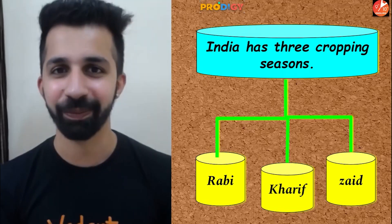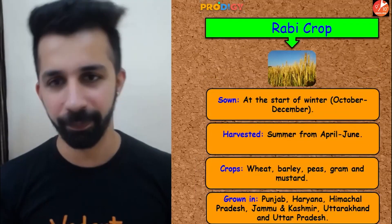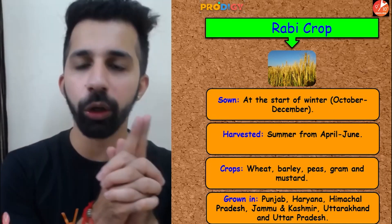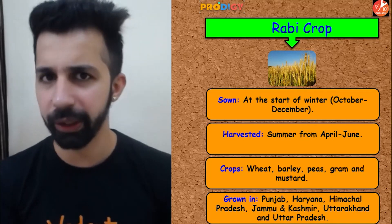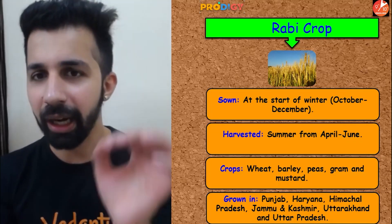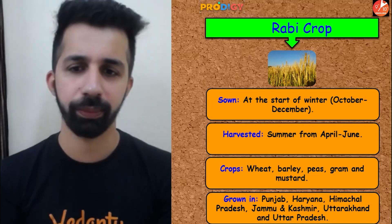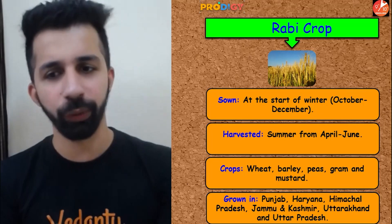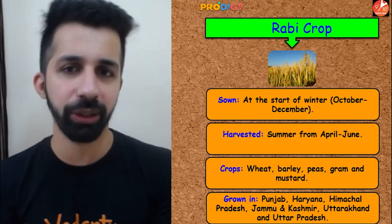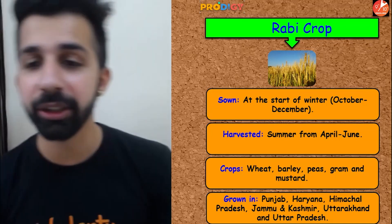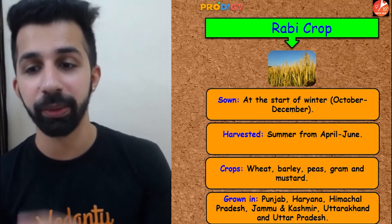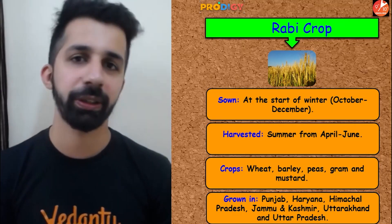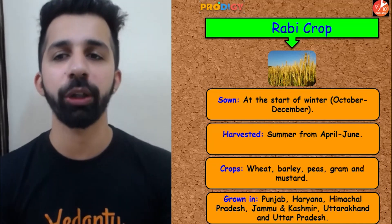The very first is Rabi. The sowing period of Rabi crops is between October and December, at the start of winter. It is harvested between April and June. Some crops grown mostly in Rabi season are wheat, barley, peas, gram, and mustard. It is grown in many Indian states like Punjab, Haryana, Himachal Pradesh, Jammu & Kashmir, Uttarakhand, and Uttar Pradesh.